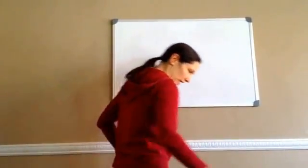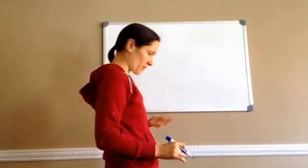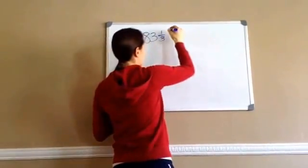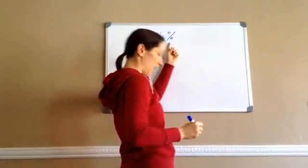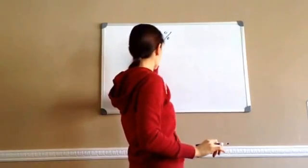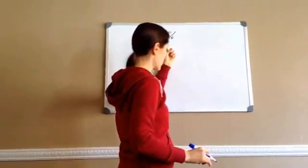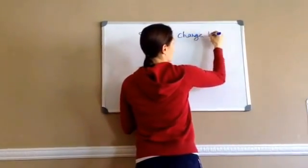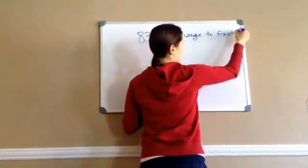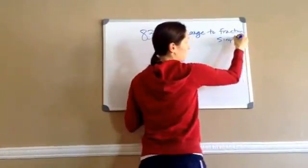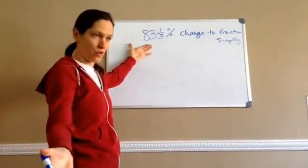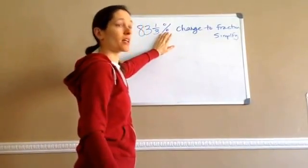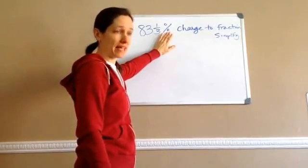And this one may kind of confuse you, so pay attention. Here's what it says to me to do. Change 83 and a third percent. So, I'm going to put the percent sign. It just says percent. Change 83 and a third percent to a fraction and simplify. Now, change to fraction and then answer or simplify. Now, you may be looking at this going, well, it is in a fraction form. Sort of. Because it has this percent, it's actually in percent form. We need to make it into a fraction.